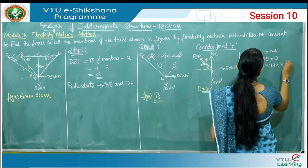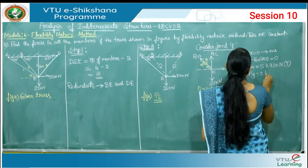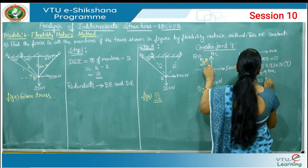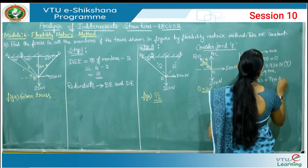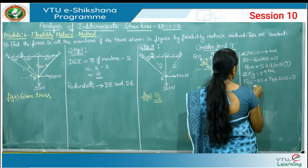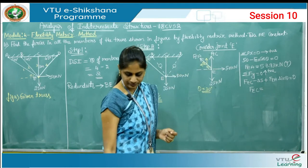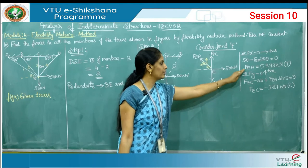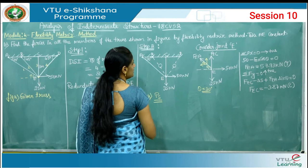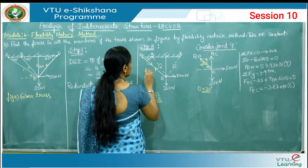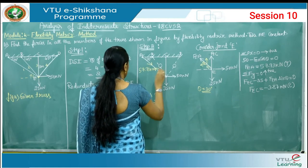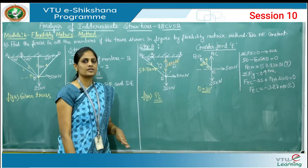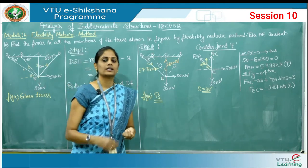Next, applying summation of Fy equals 0, taking upward forces as positive: F_EC minus 25 minus F_EA sin 30 equals 0. Substituting the value of F_EA and solving gives F_EC as minus 3.87 kilonewton, which is compressive. Transfer the forces: F_EA is positive 57.73 kN away from the joint (tensile), and F_EC is negative 3.87 kN towards the joint (compressive). This completes step number 2.